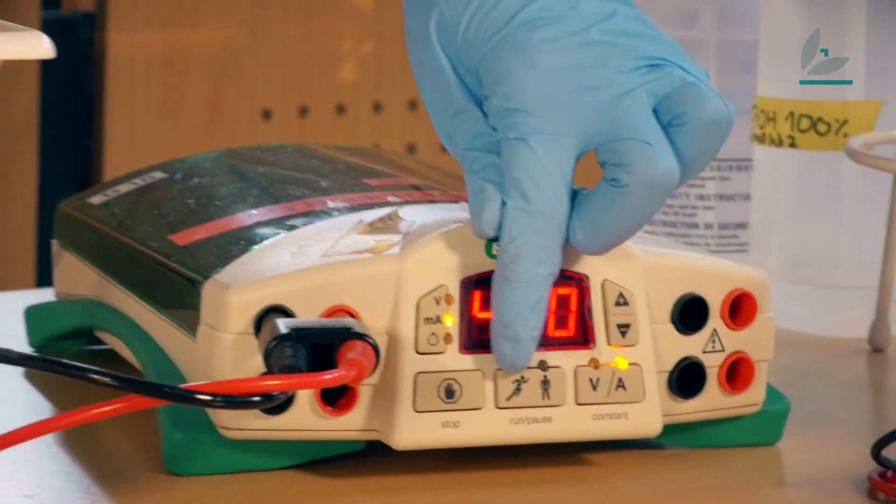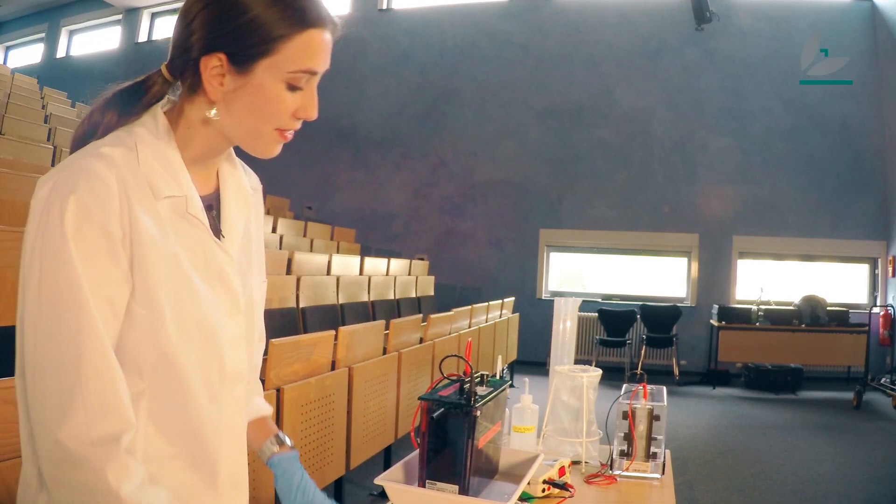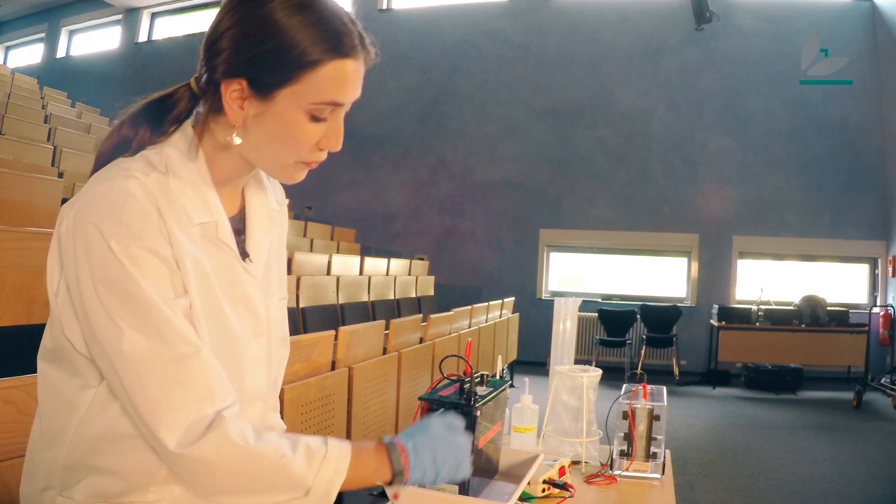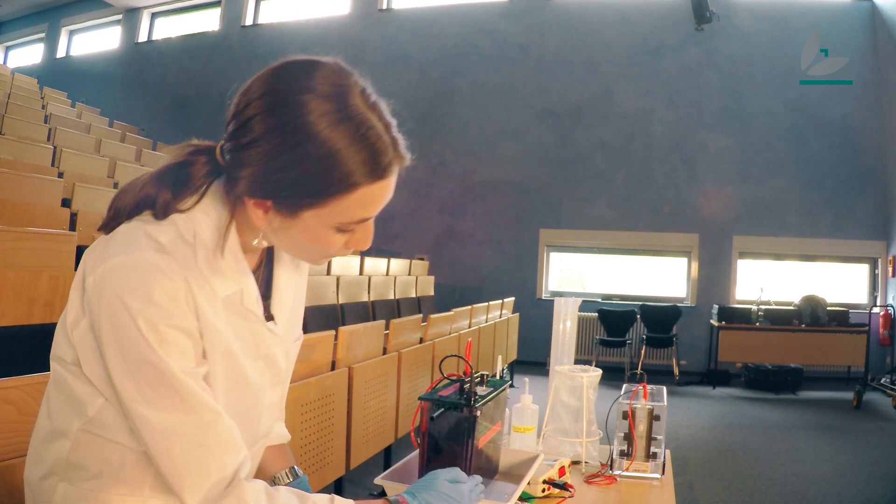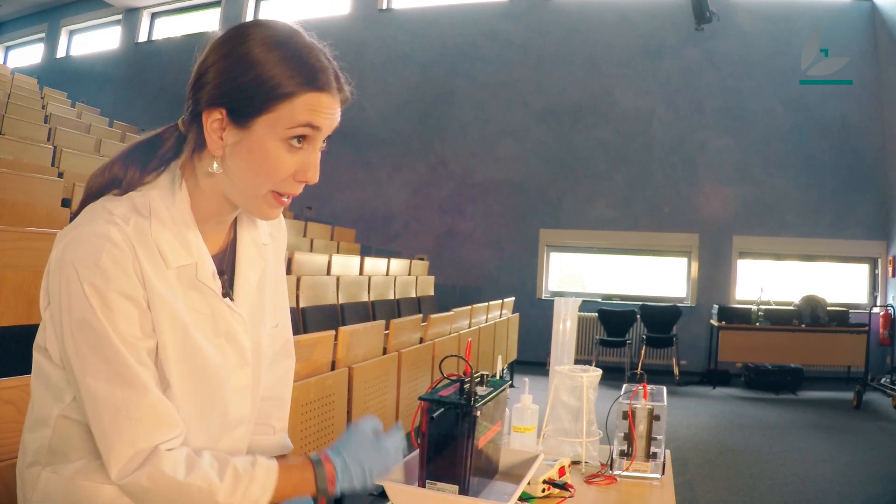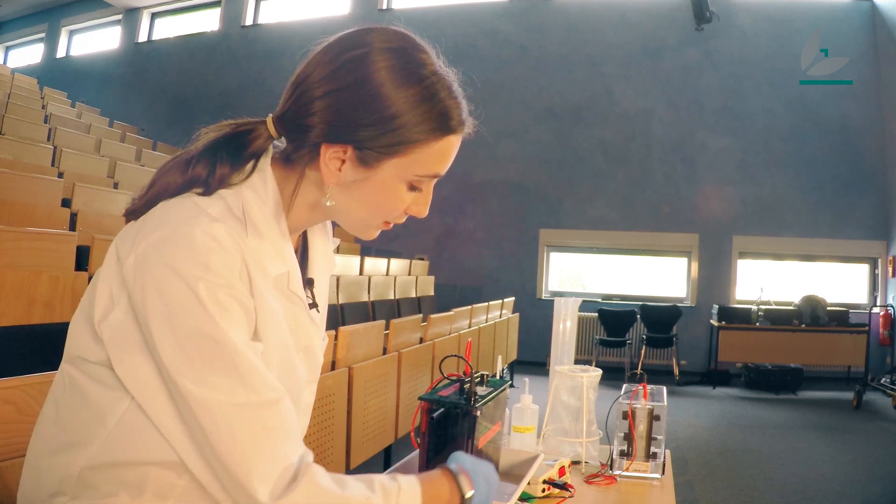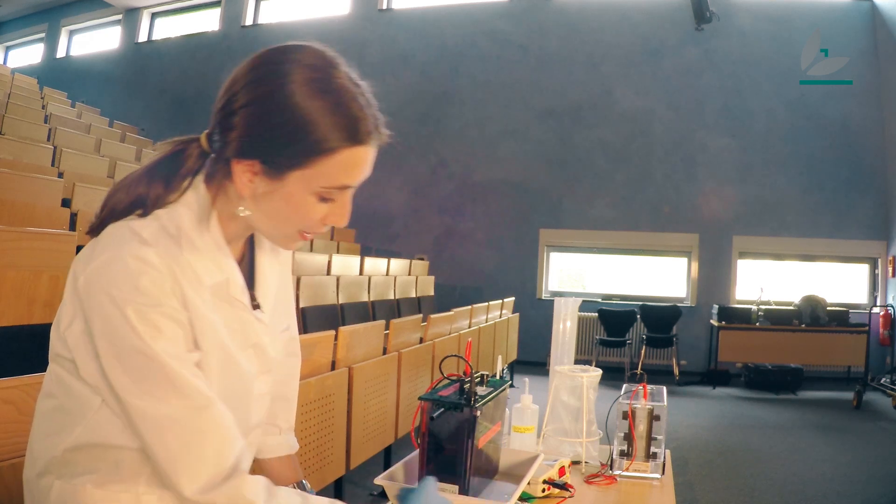So now I start the current and a current builds up that goes from the negative electrode on the front part to the positive electrode on the back part. There is a current from the front to the back that takes my proteins from the gel into the foil.